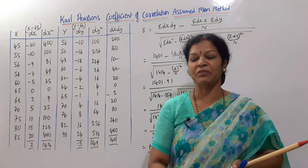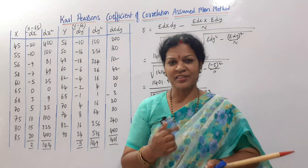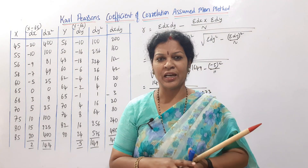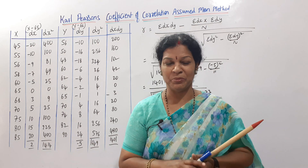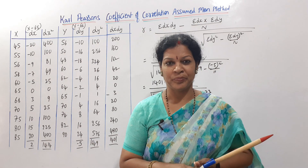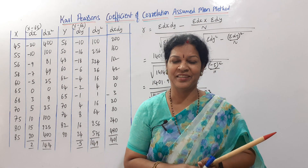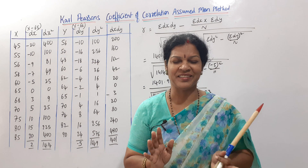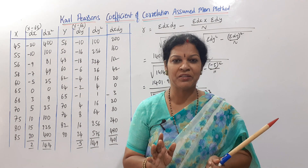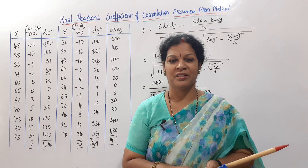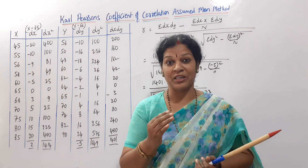Hello dear students, welcome to Devika's Commerce and Management Academy. In the last class we saw Karl Pearson's coefficient of correlation in the actual mean method. The formula was easy: sigma xy divided by the square root of sigma x-squared into sigma y-squared. Today we'll see the assumed mean method.